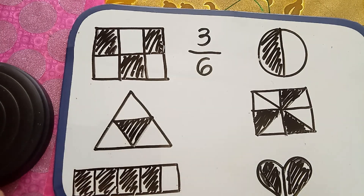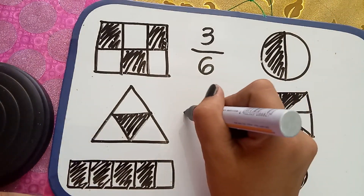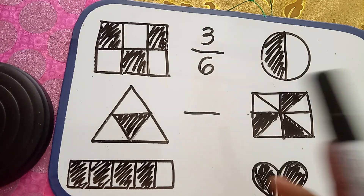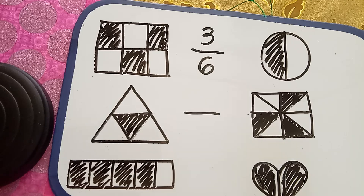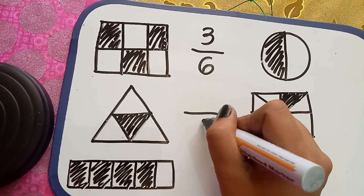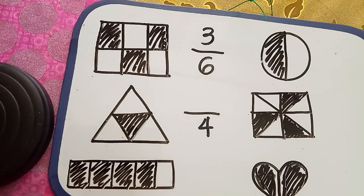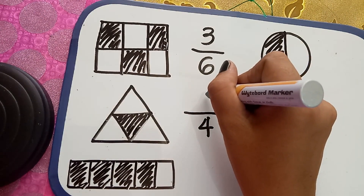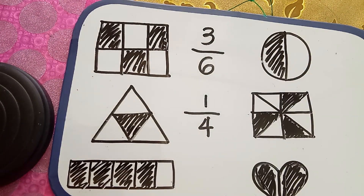Next, our example is a triangle. How many triangles or how many parts was the triangle divided? One, two, three, four. You need to include the shaded part in the denominator. And then for the numerator, how many parts were shaded? One. So your numerator is one.